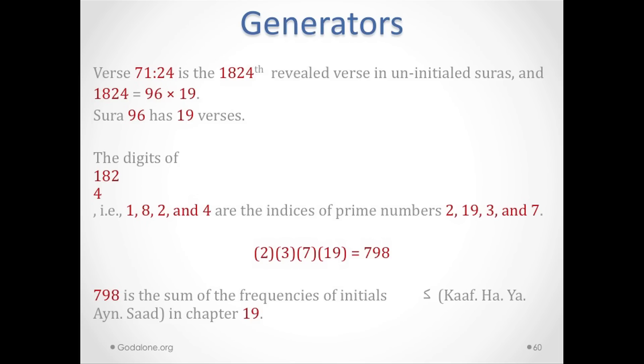Verse 71:24, which was the 19th permutation of 1-2-4-7, happens to be the 1824th revealed verse in the uninitial chapters, and 1824 equals 96 times 19, but chapter 96 has 19 verses. The digits of 1, 8, 2, and 4 are the indices of prime numbers: the first prime is 2, the eighth prime is 19, the second prime is 3, and the fourth prime is 7.